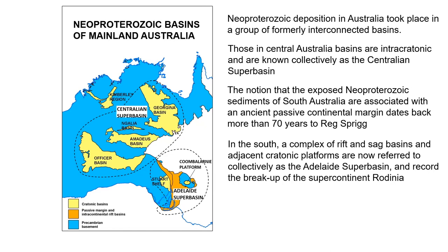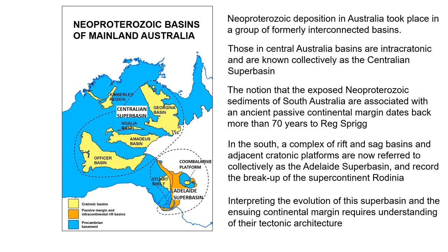In the south, we have this complex of rift and sag basins and their adjacent cratonic platforms, which we now collectively refer to as the Adelaide Superbasin. Most of us agree that these record the breakup of the supercontinent Rodinia. Interpreting the evolution of this superbasin and the ensuing continental margin requires an understanding of their tectonic architecture.